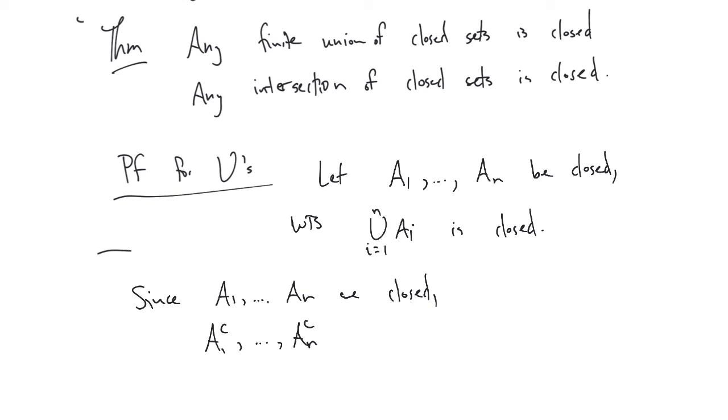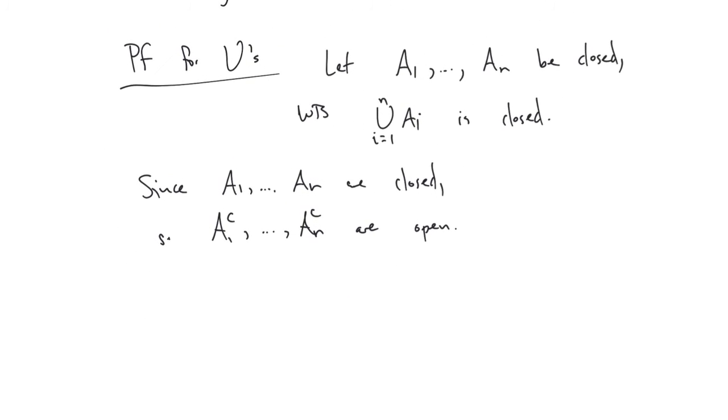And then we're going to use the theorem about opens, which we showed last week as a sort of the main lever to prove this similar theorem about closed. So if I have finitely many open sets, I said, or open, I said it out loud, but I didn't write it. So these are open, right? That's why I wrote them. Remember any finite intersection of opens is open. So that means intersection I equal one to N AI complements. It doesn't look great down there. AI complement is open. All right.